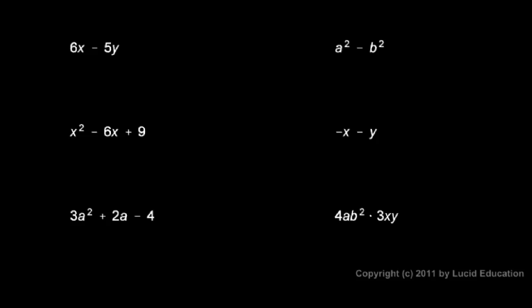This first expression has two terms, and the two terms are 6x and negative 5y. And the point here is to realize that that negative sign is part of that 5y term. It's negative 5y.